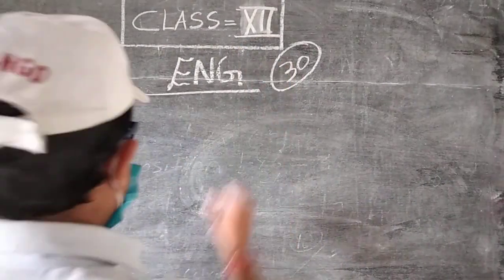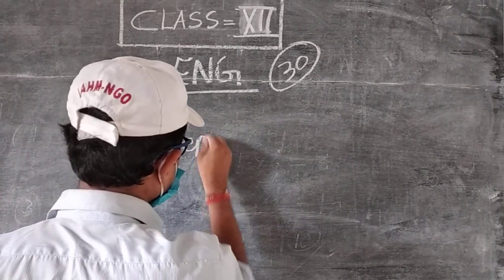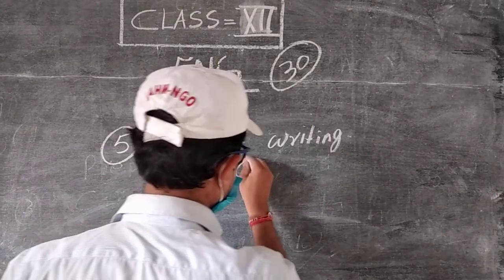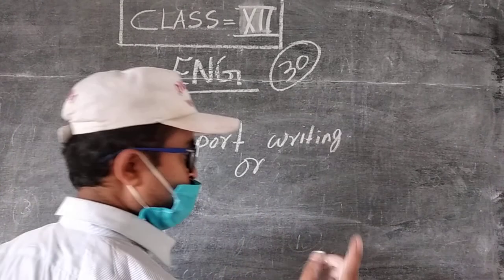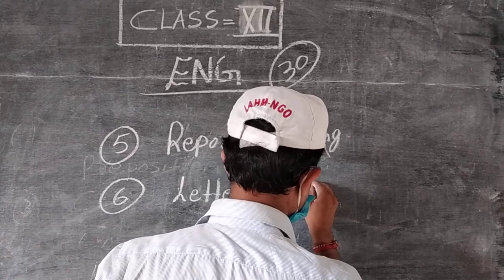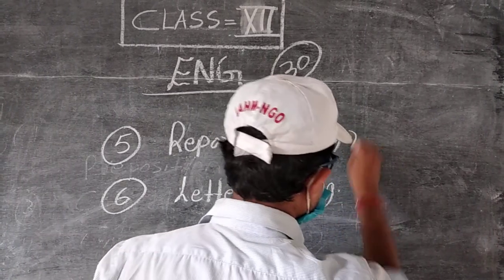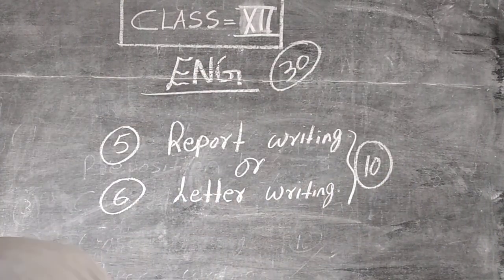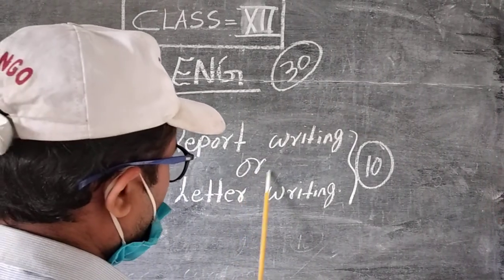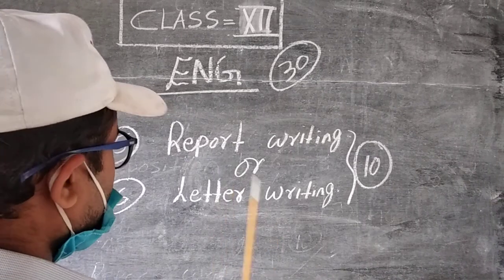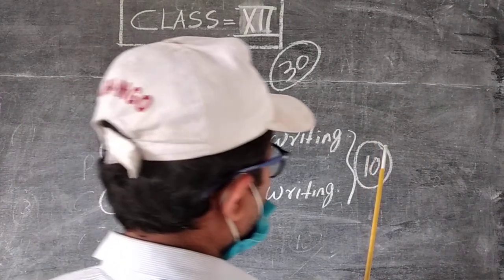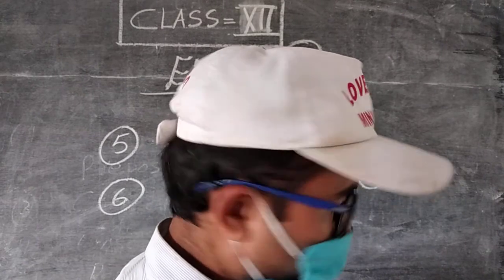Number five will be report writing. Report writing will be there - one report writing - and you will see in your question paper also letter writing. You have to select any one question from this, either report or letter, and one you have to leave. For that, the West Bengal Council of Higher Secondary will give you 10 marks.